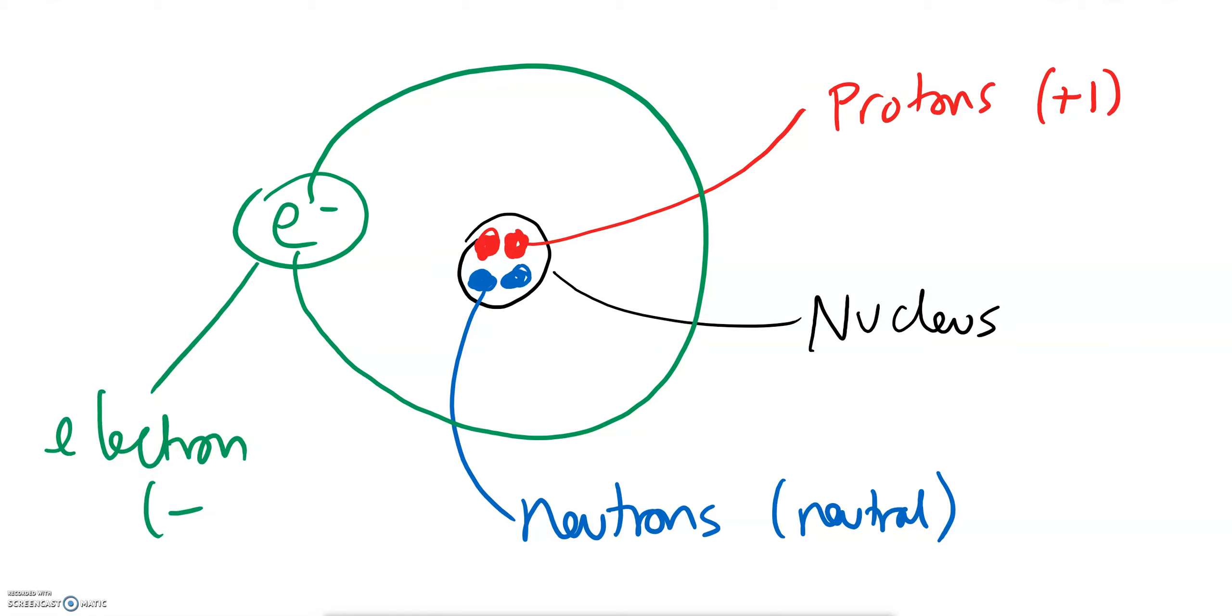And this has a negative one or minus one charge. Now in order for this atom to be an atom it has to have the same number of protons and neutrons. So I actually need to add in another electron whizzing around the outside.